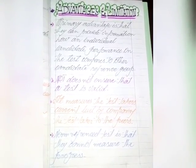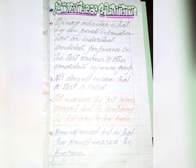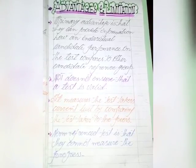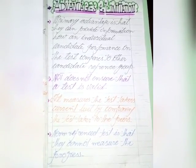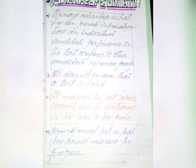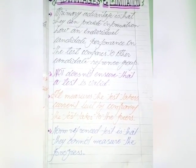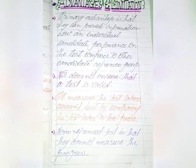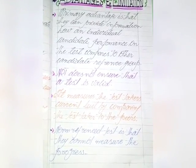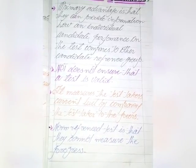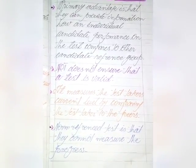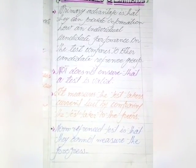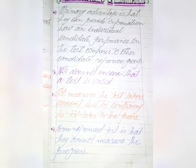Advantages and Limitations: The primary advantage is that NRT can provide information on how an individual candidate performs relative to other candidates in the reference group. A limitation is that NRT does not ensure that a task is valid, because it depends on scores rather than on actual performance. It depends on how good the scores are.